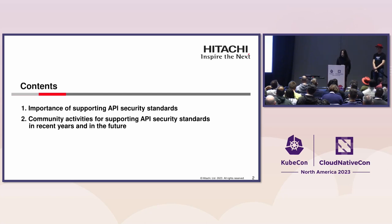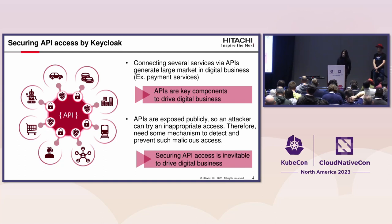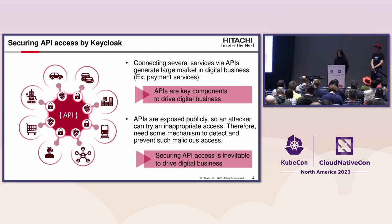In my talk, I'd like to tell you first why supporting API security features in Keycloak is important, and then how Keycloak supported these API security open standards and features. As you may know, connecting several services in several domains via APIs generates large markets in the digital business sector — for example, online payment services. But due to their nature, APIs are exposed publicly. Therefore, an attacker tries to access these APIs improperly and illegally. We need some mechanism to detect and prevent such malicious API access. Securing API access is inevitable to drive the digital business sector.